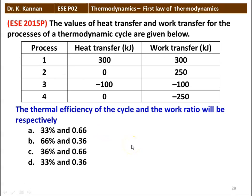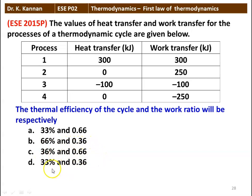The next question: the heat transfer and work transfer for a thermodynamic cycle with 4 processes are — heat: 300, 0, minus 100, 0; work: 300, 250, minus 100, minus 250. The thermal efficiency of the cycle and the work ratio will be respectively: 33% and 0.66, 66% and 0.36, 36% and 0.66, or 33% and 0.36. The answer is 66% and 0.36.